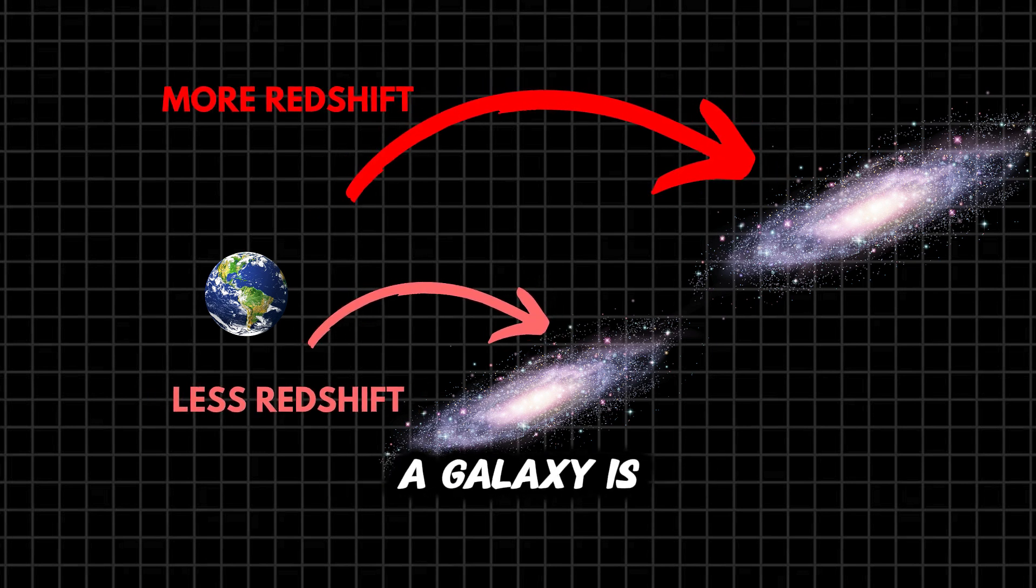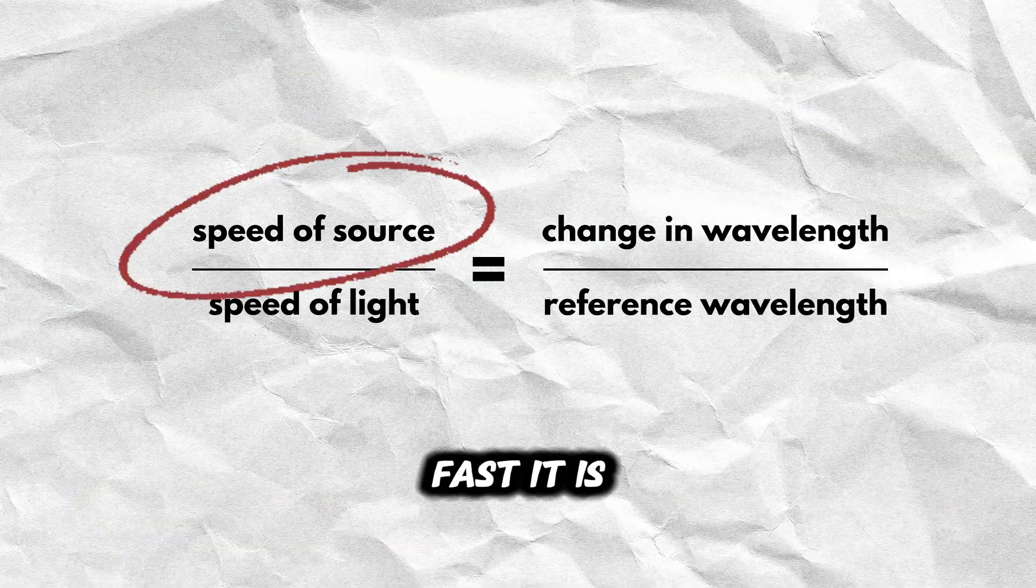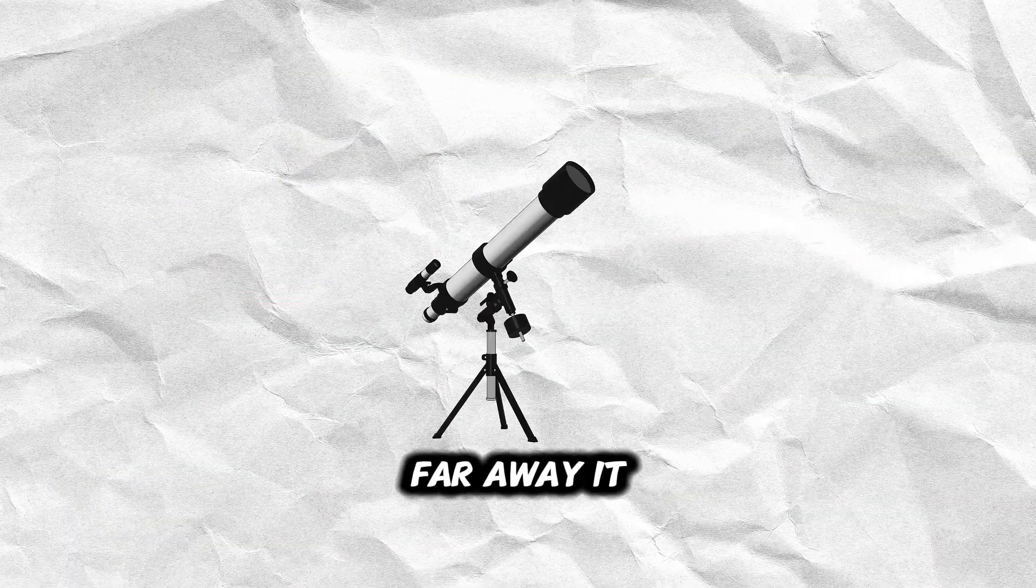The farther away a galaxy is, the more its light is redshifted. This tells us not only how fast it is moving, but also how far away it is.